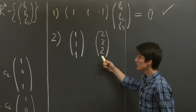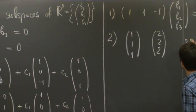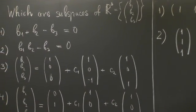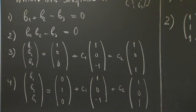But is (2, 2, 2) described by this equation? Well, no, because the third entry, 2, is not equal to 2 times 2, right? So the example in number 2 is not a subspace.